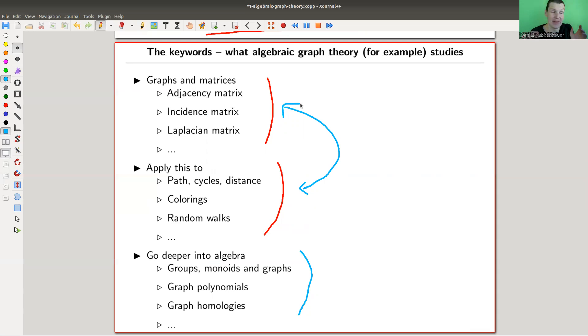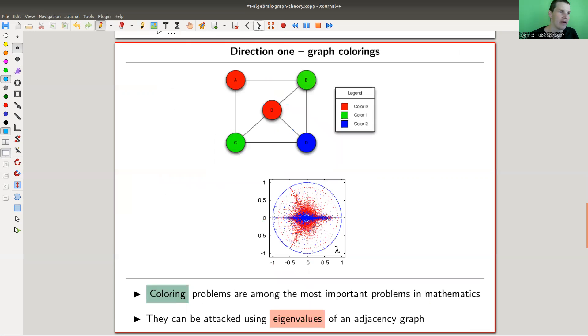We will then go a little bit deeper into algebra. We can associate groups to graphs, we can associate polynomials to graphs, and even homology theories to graphs. There's a very deep connection between graph theory and algebra. We just start with the easiest one, the matrix one, which is easy but also powerful at the same time. It solves all the coloring type problems. It's just ridiculously beautiful.